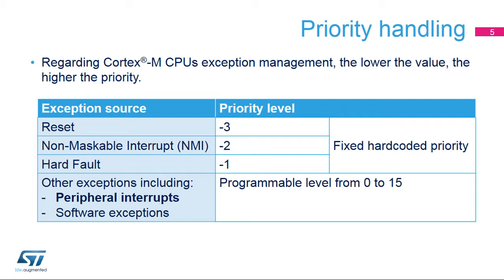Whenever a peripheral interrupt is requested at the same time a supervisor call instruction is executed, the relative priority of these hardware and software exceptions dictates which one is handled first. Regarding the STM32WB microcontroller, a non-maskable interrupt, or NMI, is caused either by an SRAM2 parity error, a flash double ECC error, or a clock failure.